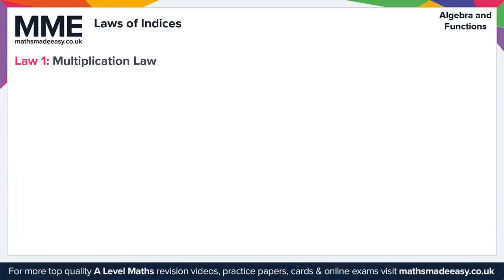Welcome to this Math Made Easy video on the laws of indices. To start with, let's take a look at our first law, which is the multiplication law. The multiplication law states that a to the m times a to the n is equal to a to the m plus n.